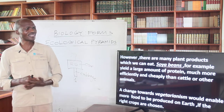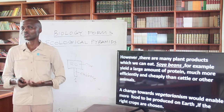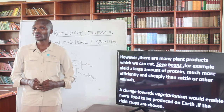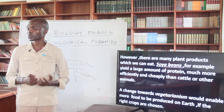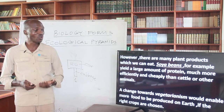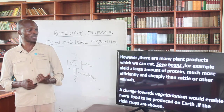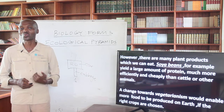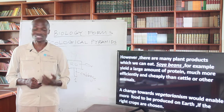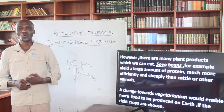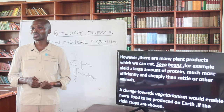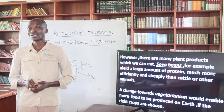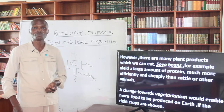However, there are many plant products which you can actually eat. A very good example is soybeans, which yield a large amount of protein much more efficiently and cheaply than cattle or any other animals. So what we are seeing is that a shift towards vegetarianism would actually enable more food to be produced on earth, if the right crops are chosen, planted, and consumed.